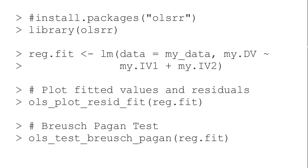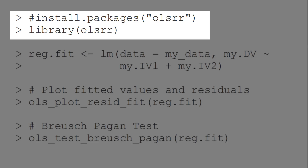There are different ways to check the homoscedasticity assumption in a regression model with R. We can look at a plot and/or we can run a hypothesis test. For this, we can use the library OLSRR.